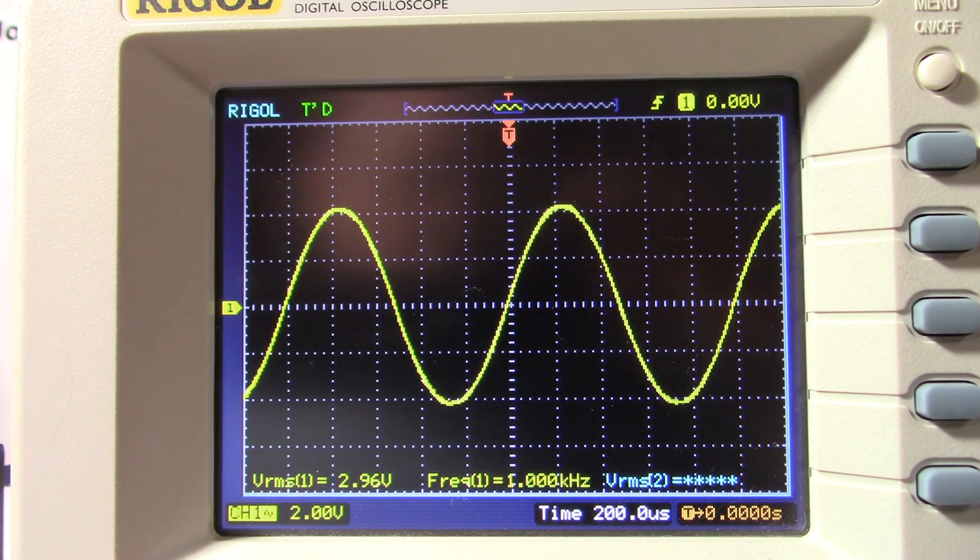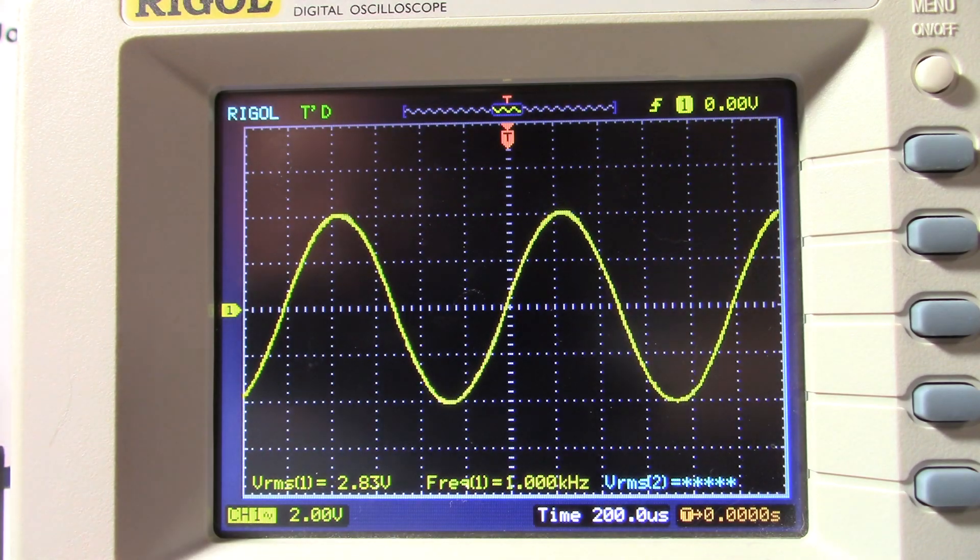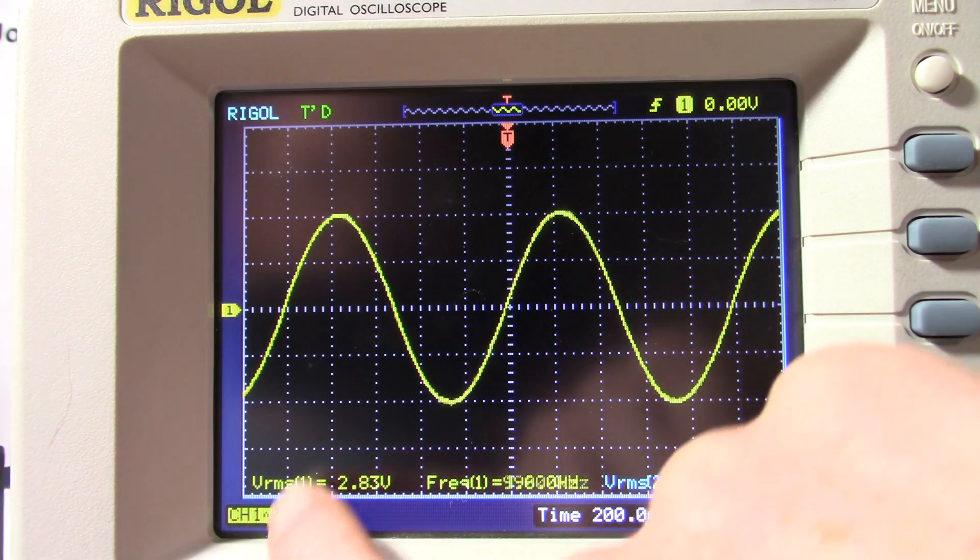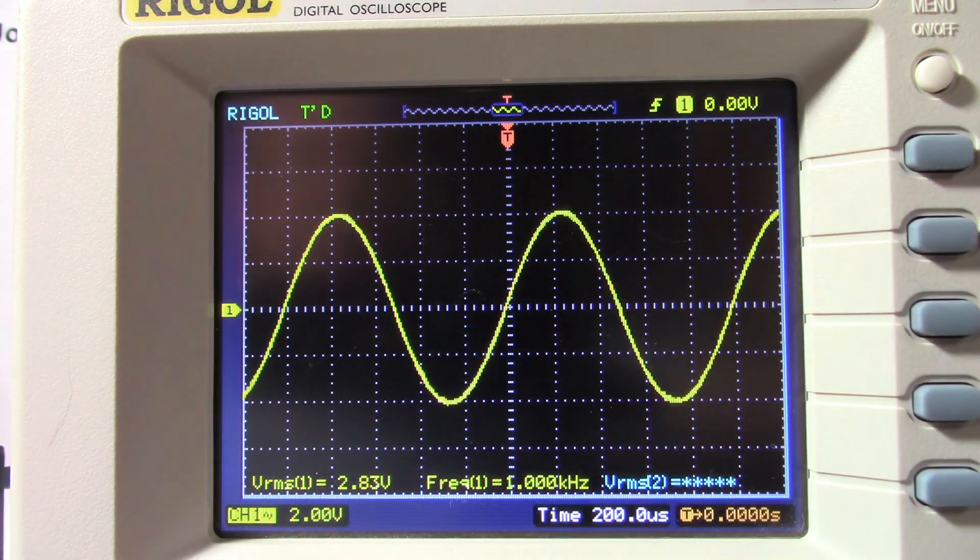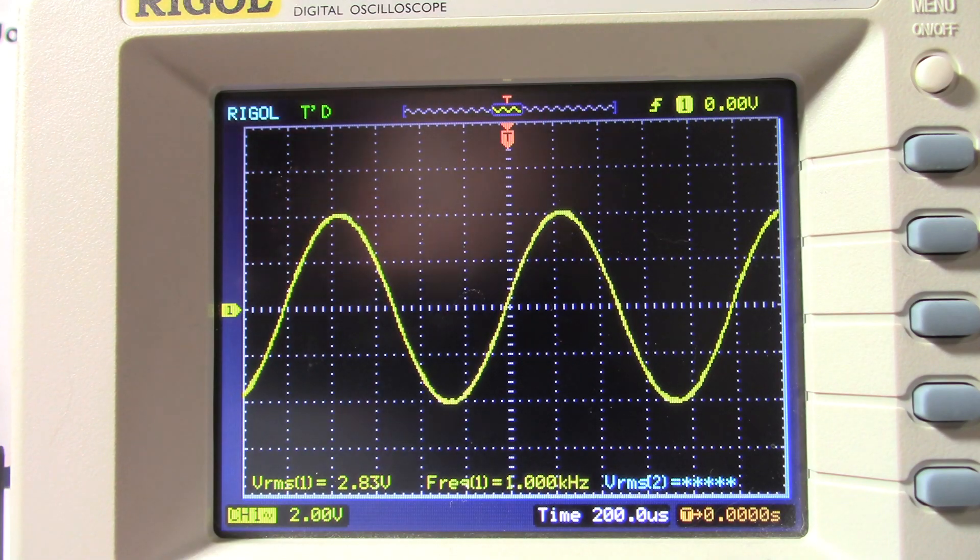I want to take a look at 4 ohm power as well. I have the 4 ohm load connected and adjusted the signal just before clipping. Look at that. It's right at 2.83 volts, which squared is 8 divided by 4. So we're getting 2 watts out of the amplifier.